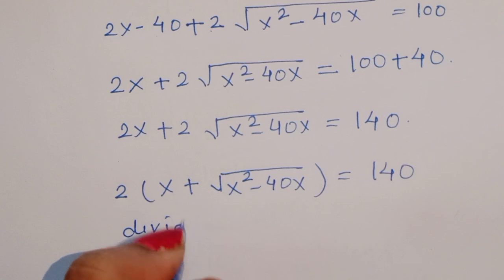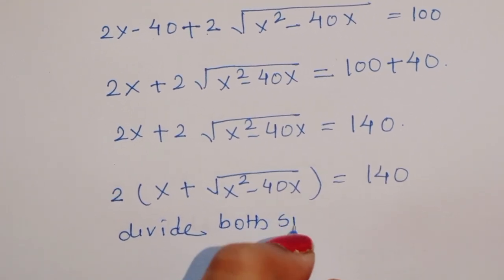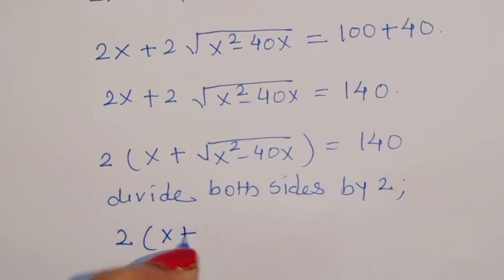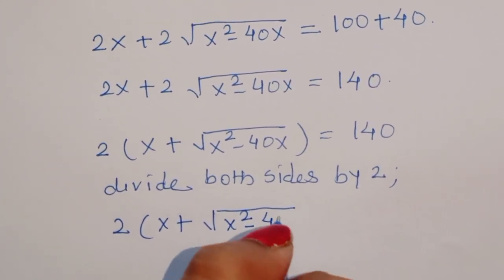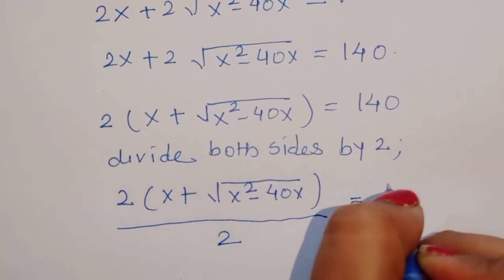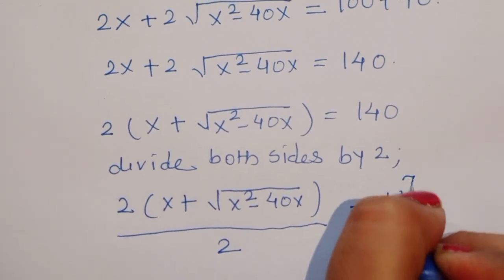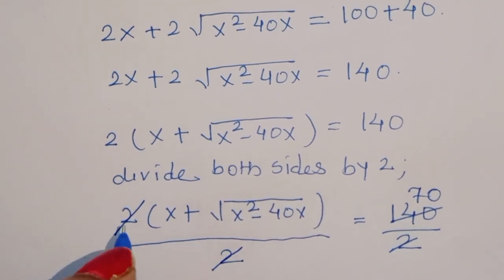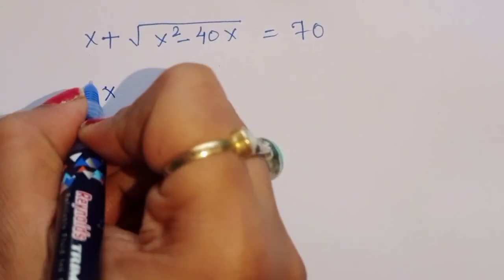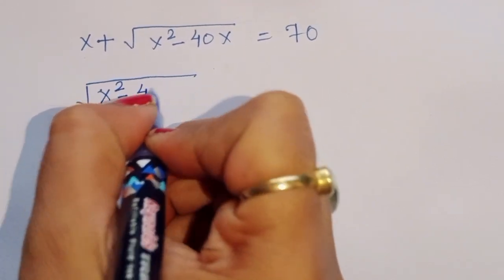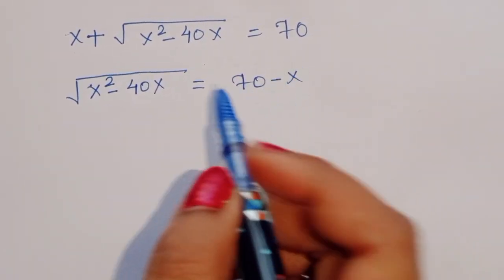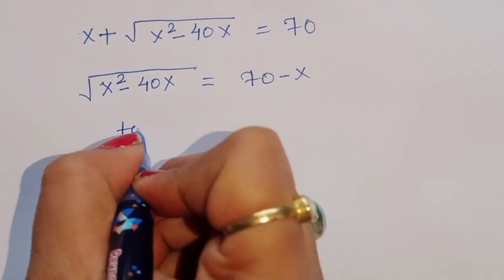Dividing both sides by 2, we get x plus square root of x squared minus 40x equals 70. Rearranging: square root of x squared minus 40x equals 70 minus x.